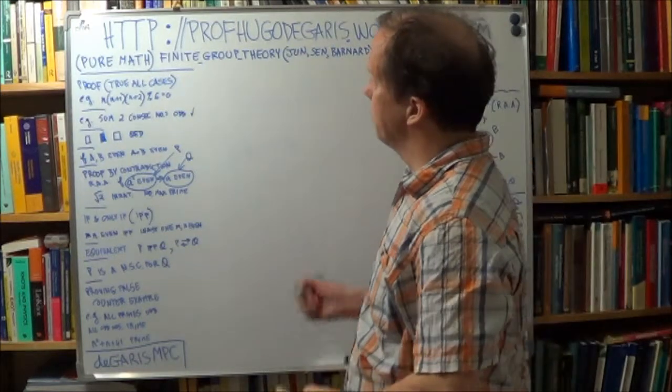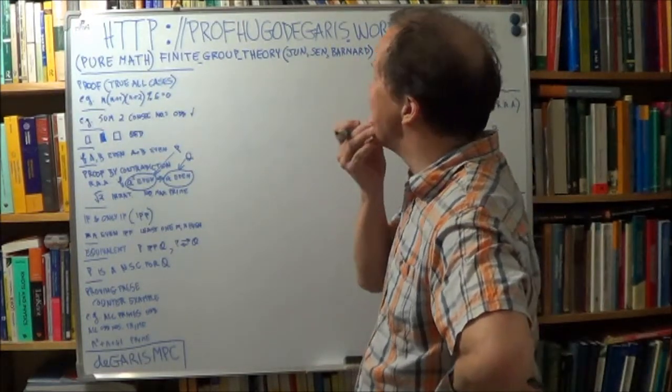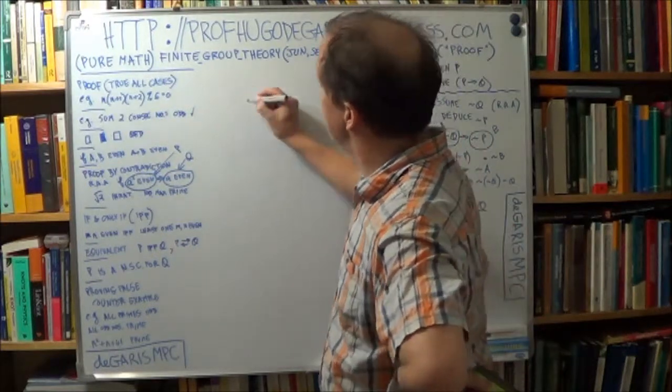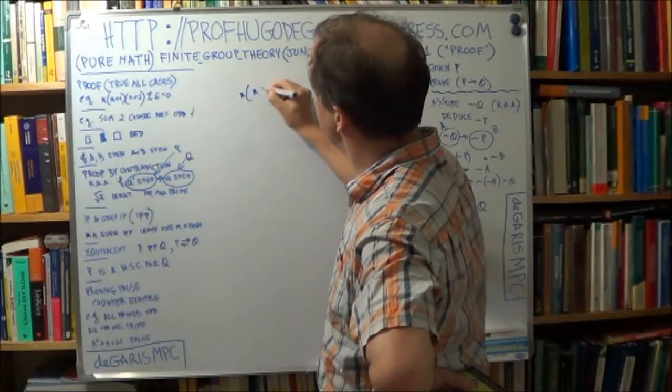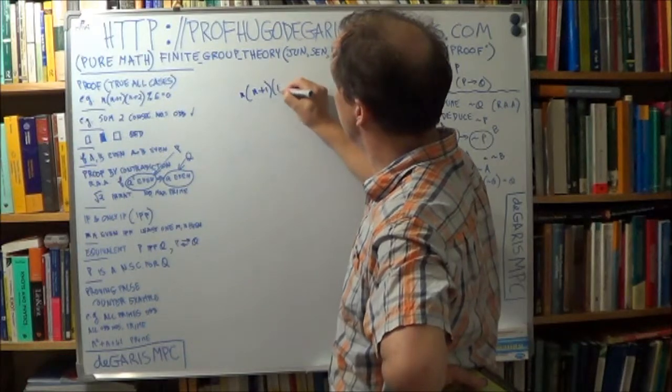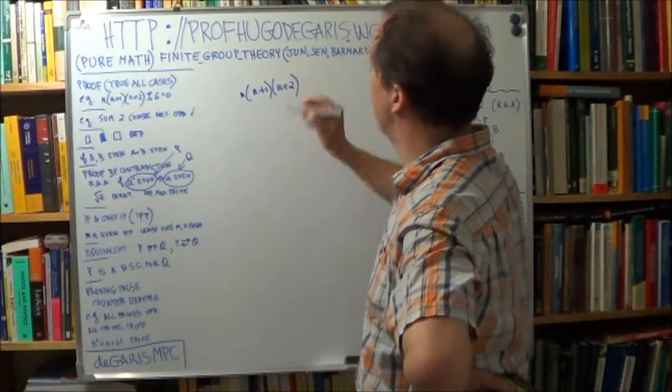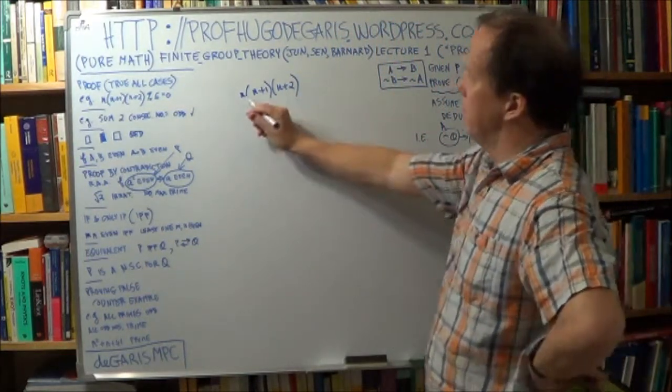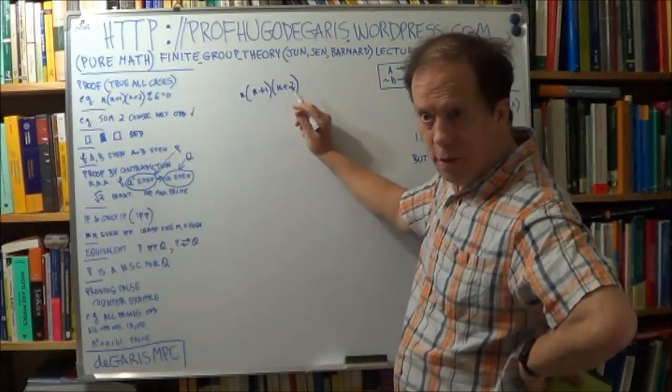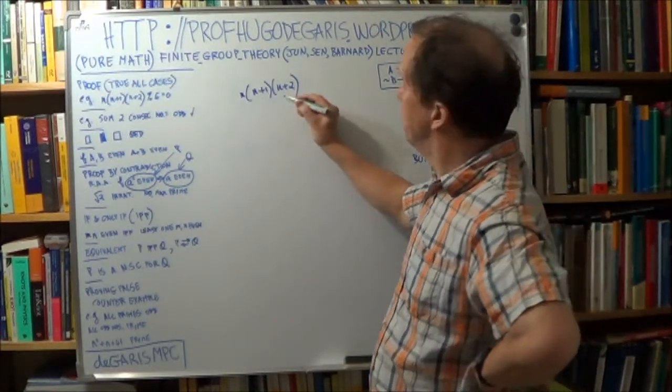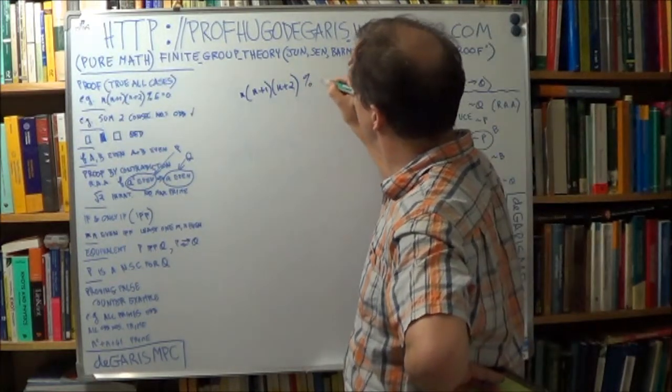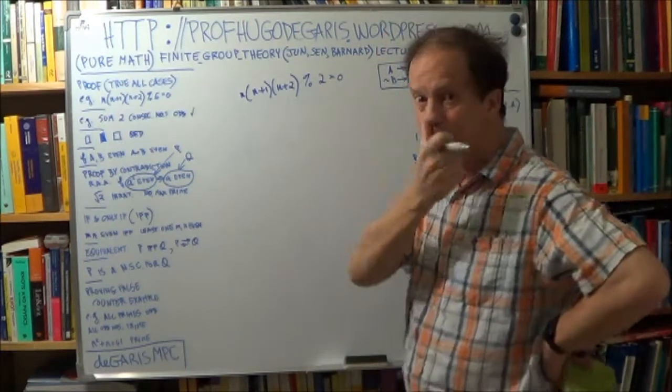So how could you do that? Well, here's one way, as a proof, an example of a proof. That product is obviously divisible by 2, right? So that's true. Now, why is that?